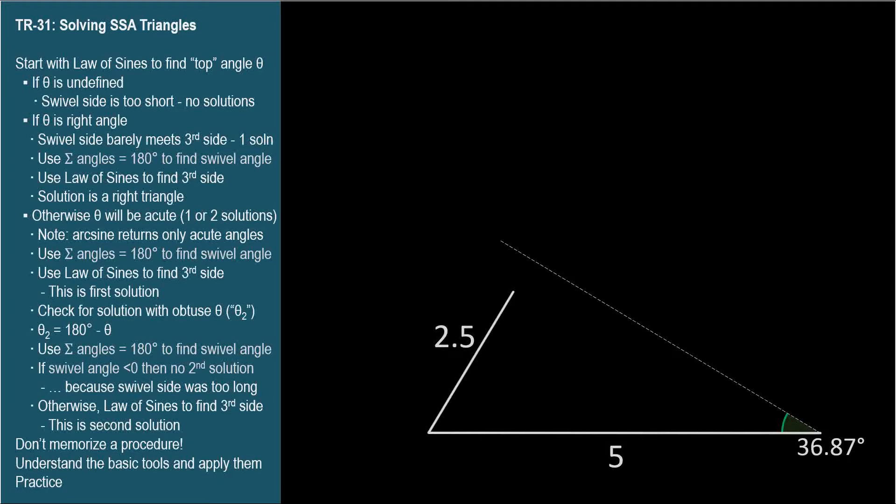Let's see what happens with 2.5. We use the law of sines to find the angle opposite the other given side, the top angle here, which we can temporarily call theta.